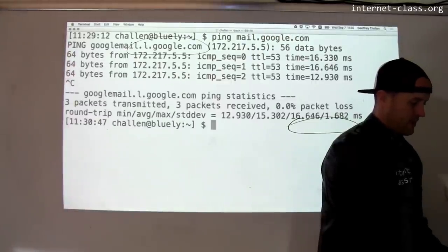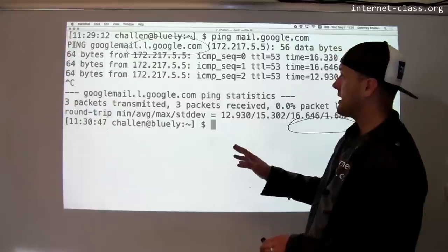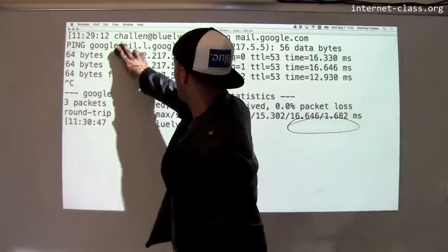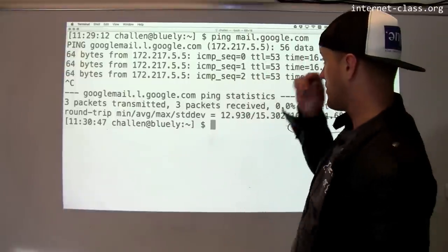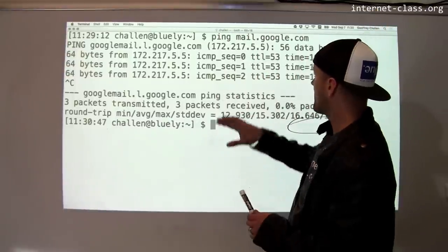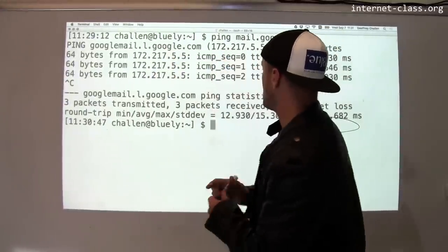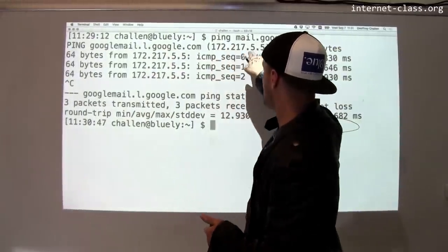So that's kind of interesting, right? So I can actually ping, in this case, one of Google's servers. So this is a machine that's hosted at Google. You can see that mail.google.com was translated to this IP address, 172.217.5.5. They probably use multiple machines to provide this particular service.